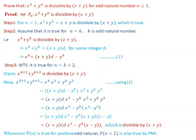Starting from the left-hand side of our claim, that means x to the power of k plus 2 plus y to the power of k plus 2. We write x to the power of k plus 2 by the exponential rule as x to the power of k times x squared, and y to the power of k plus 2 as y to the power of k times y squared. So we have x to the power of k times x squared plus y to the power of k times y squared.